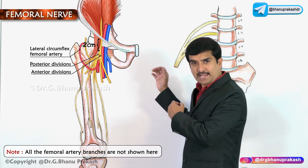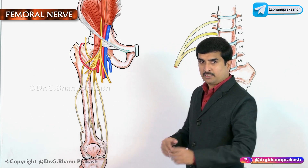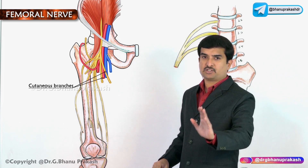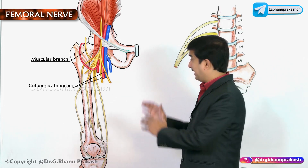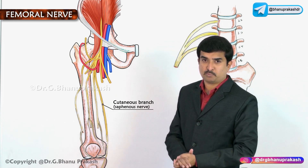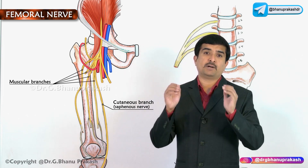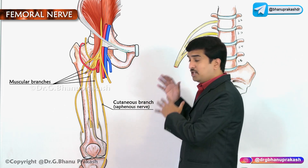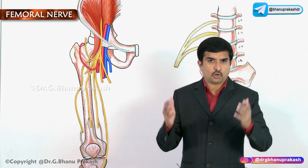The anterior division gives off two cutaneous branches and one muscular branch. The posterior division gives off one cutaneous branch, which is the saphenous nerve, and four muscular branches.